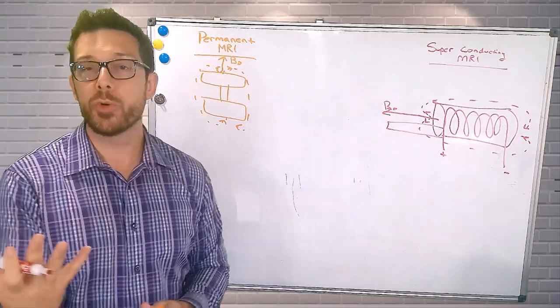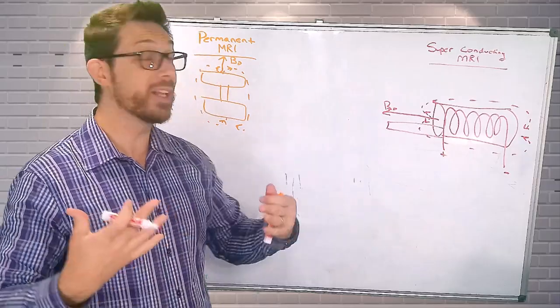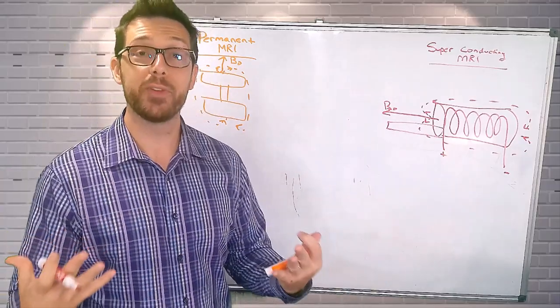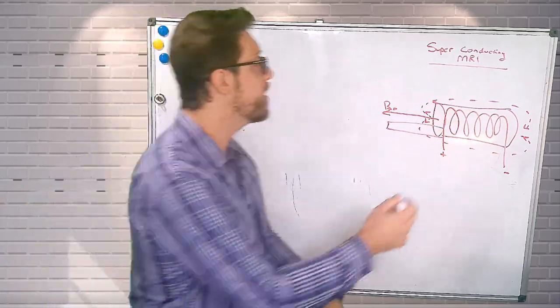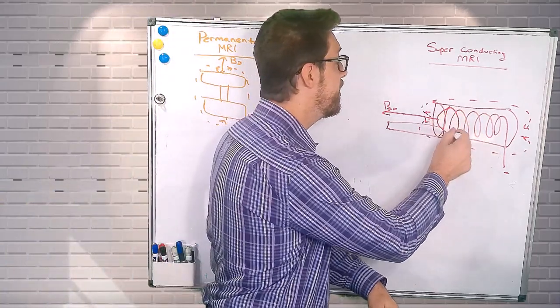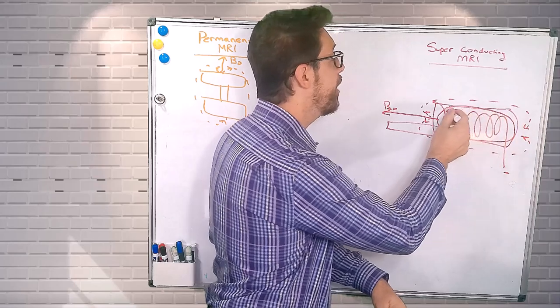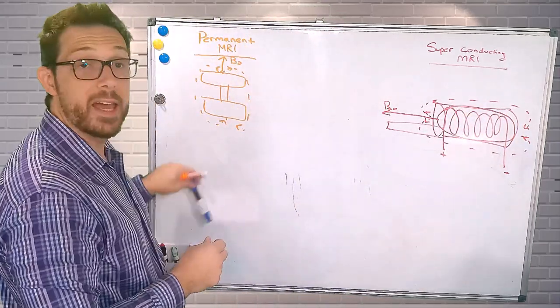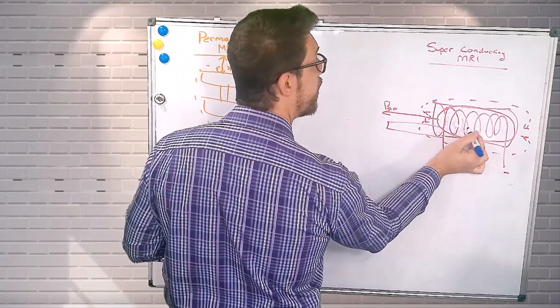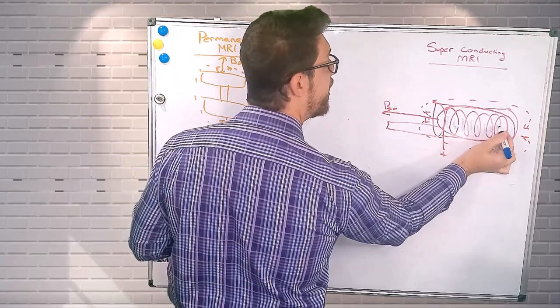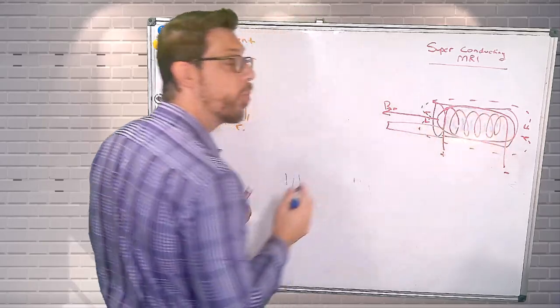What makes these even more interesting and what allows us to reach these ultra-high field strengths is that we submerge this in cryogen. We have this cryostat, then we take this coil of wire and put it in. We fill that cryostat with liquid helium, super cold, four Kelvin.